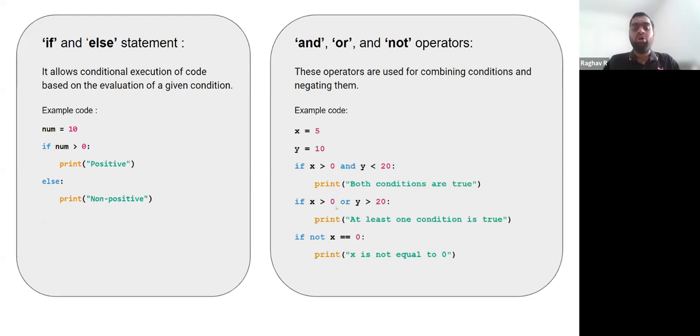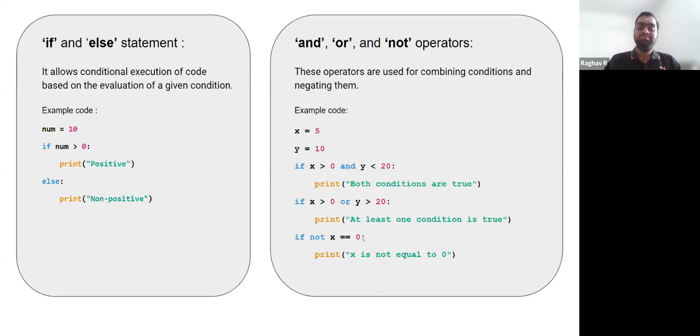Similarly, we can use the or or not operator. Not is basically the negative logical condition — if we say 'if not x == 0', that means x is not equal to zero.